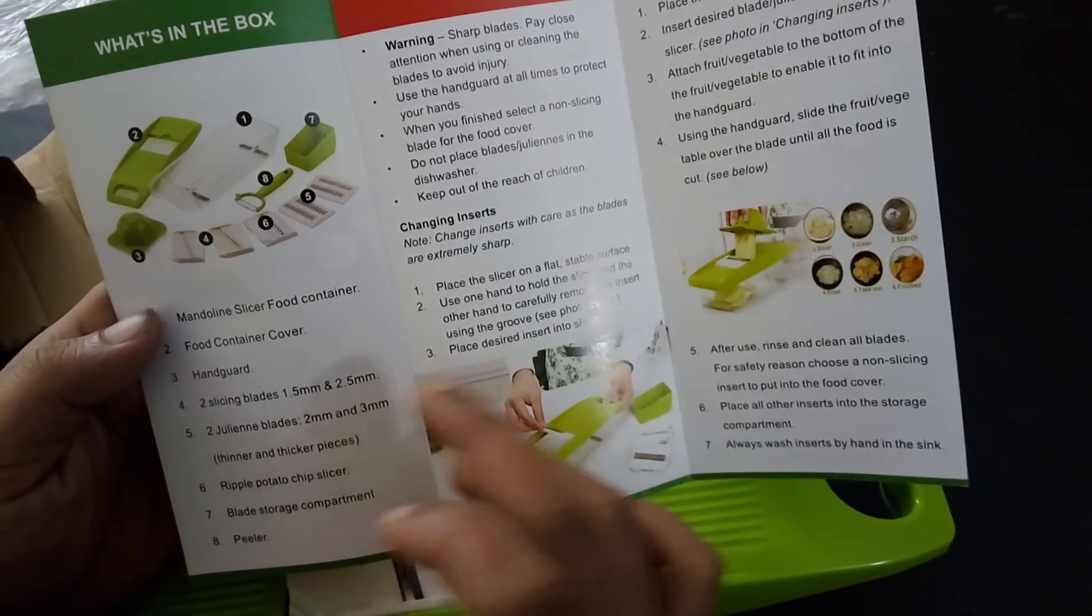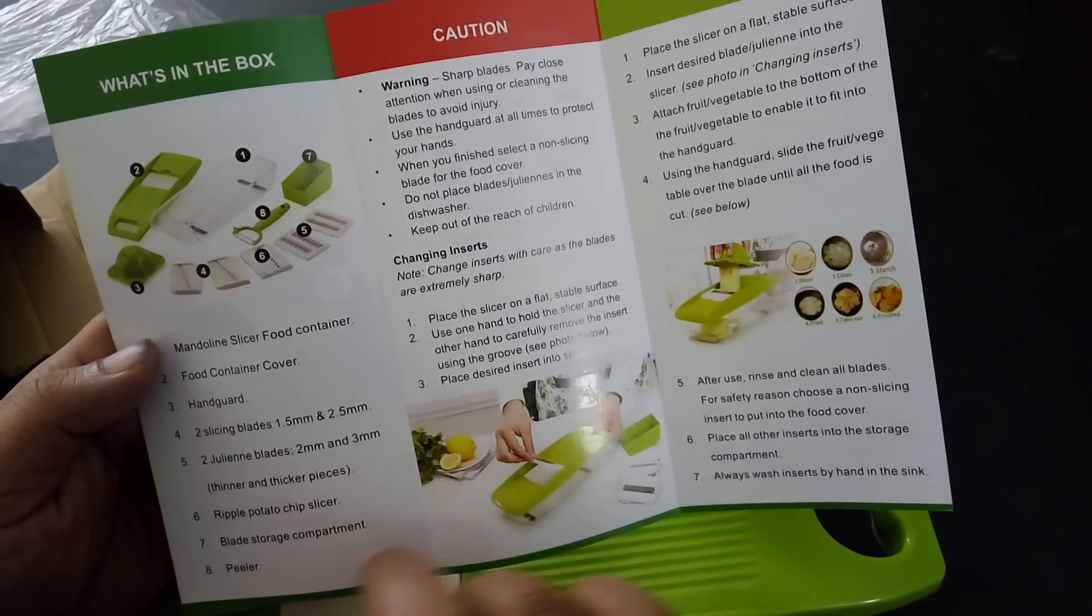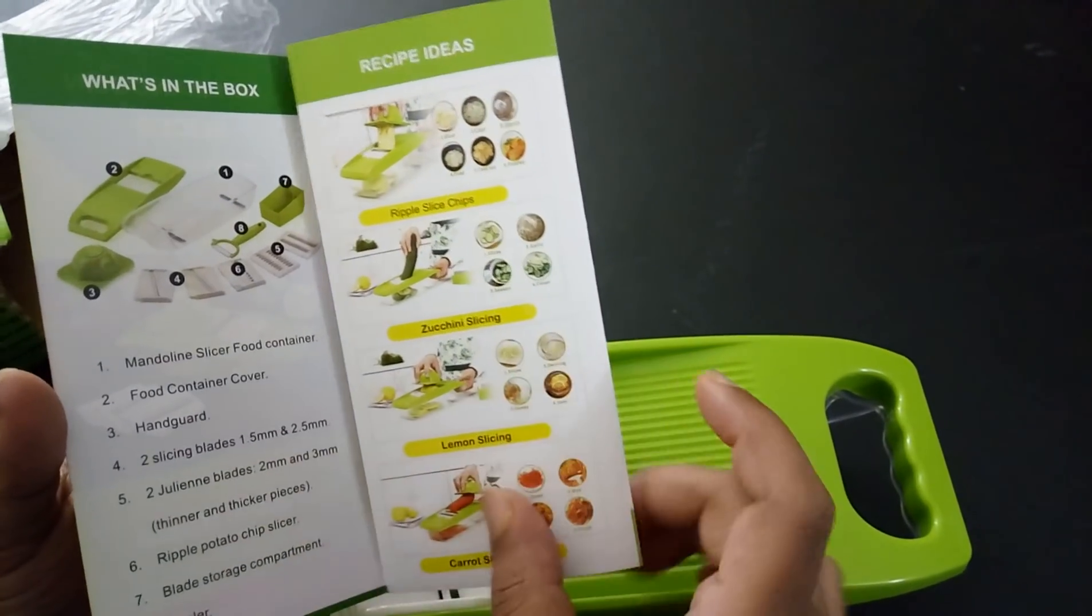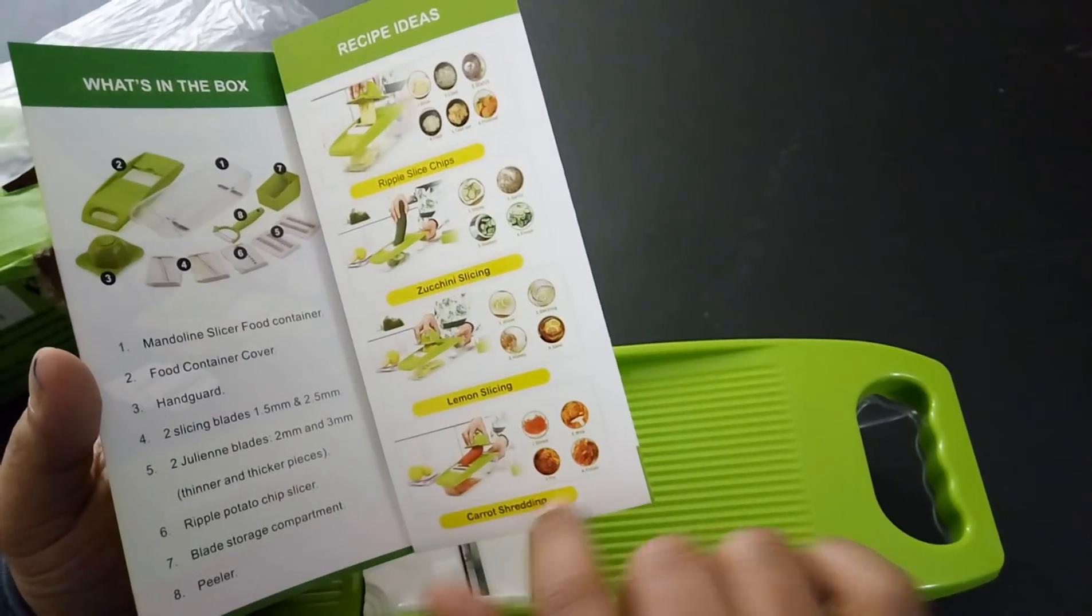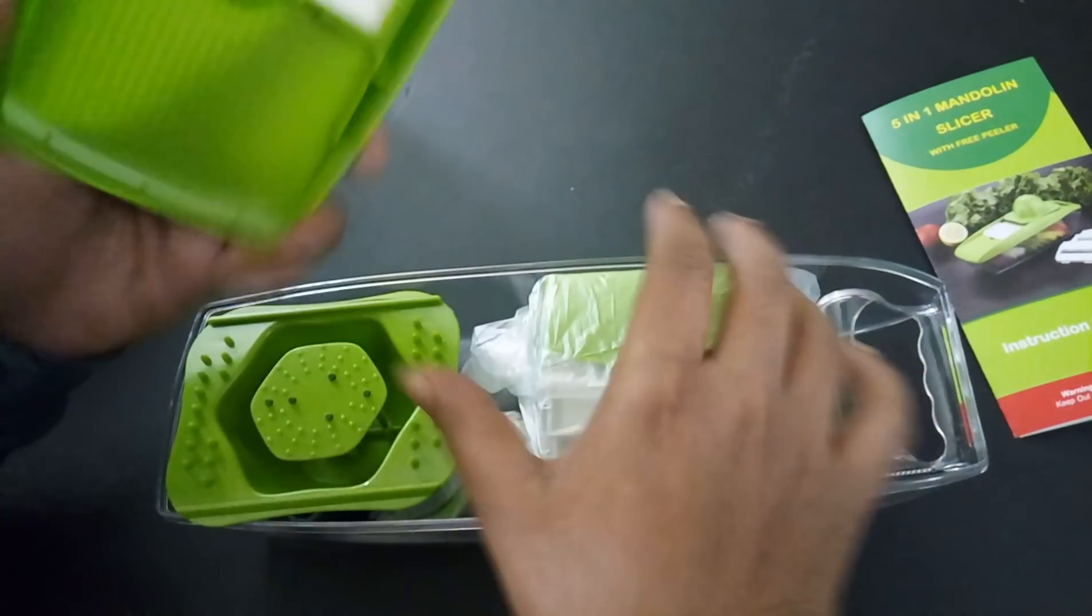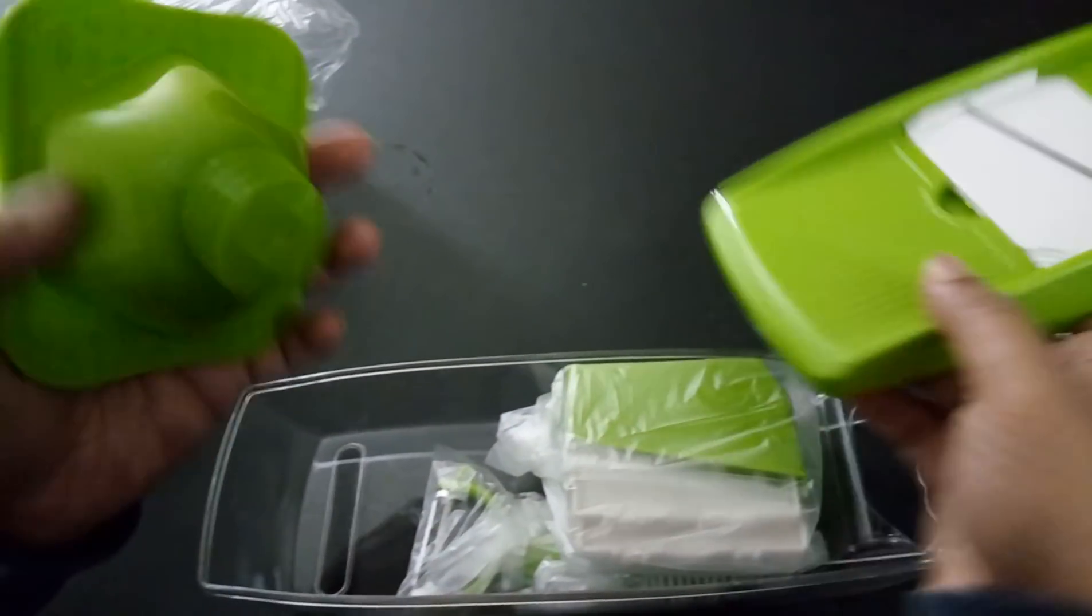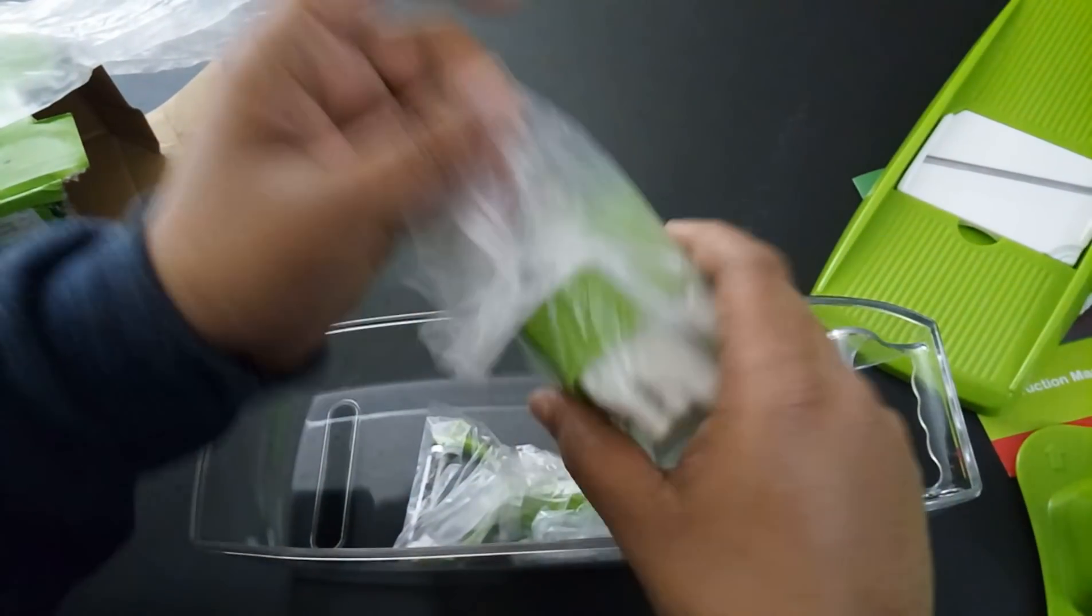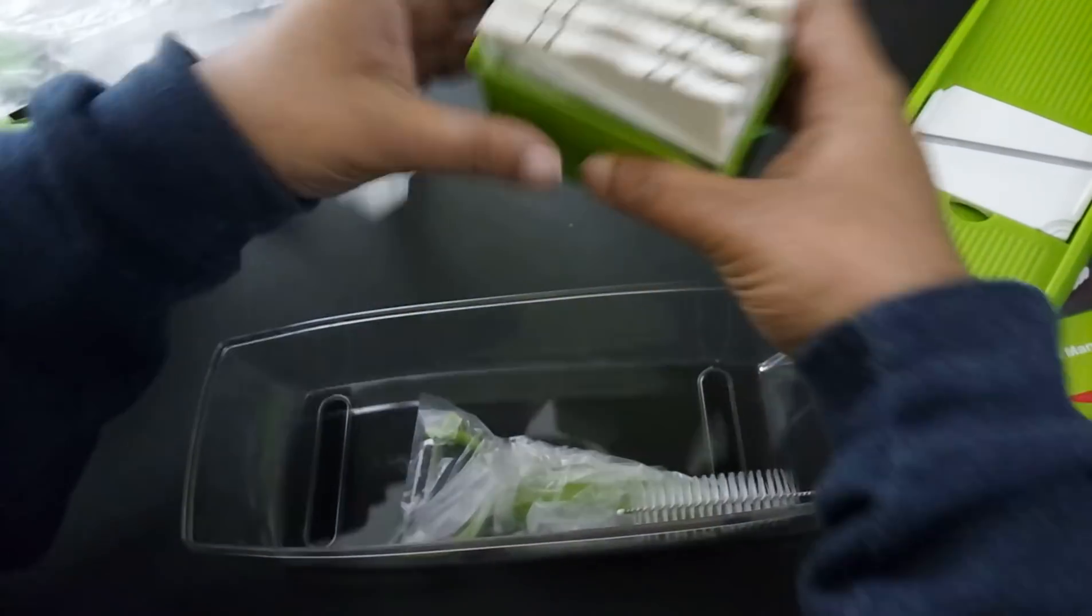You can see what all types of slicing it supports and shredding it supports over here. Here, this is the top of the mandolin slicer. This is the fold and this is the blade holder.